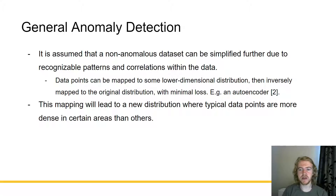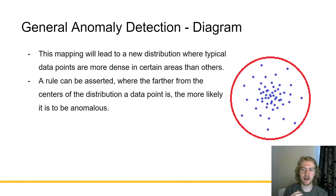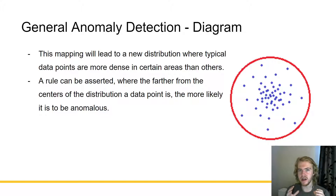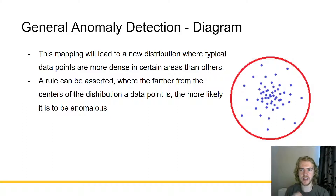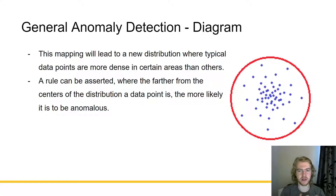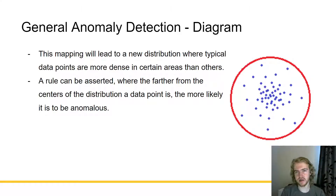This mapping will lead to a new distribution where typical data points are more dense in certain areas than others. As you can see from the diagram on the right, this is an example of a distribution like that, where near the center there's a densely populated area and then as you go farther and farther out, there's less and less samples. So then a rule can be asserted where the farther from the center of the distribution a data point is, the more likely it is to be anomalous, or the farther from the densely populated areas of a distribution, the more likely it is to be an anomaly.